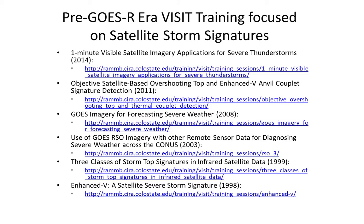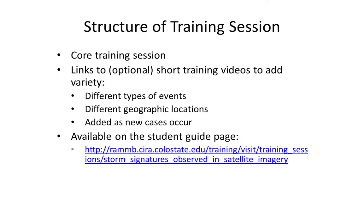The storm scale signatures we'll be discussing are not new. You can refer to past VISIT training sessions that discussed storm scale signatures. What is new is that this training session covers examples of storm scale signatures with GOES-16 imagery. These signatures are more readily apparent in the GOES-R era compared to past training sessions which looked at imagery from the pre-GOES-R era. The structure of this training session covers the core training session, plus optional short training videos over different geographic locations, which will be added to the student guide page as new cases occur.